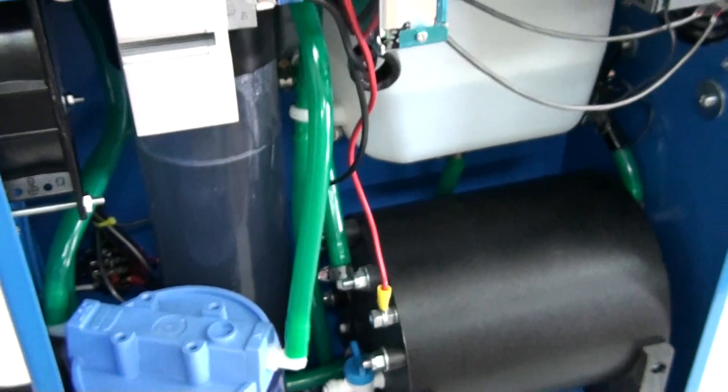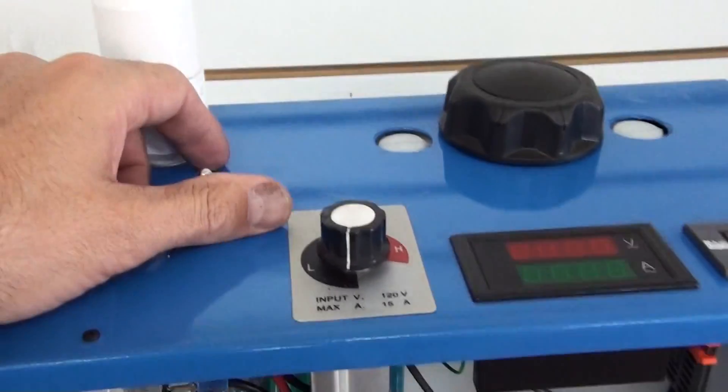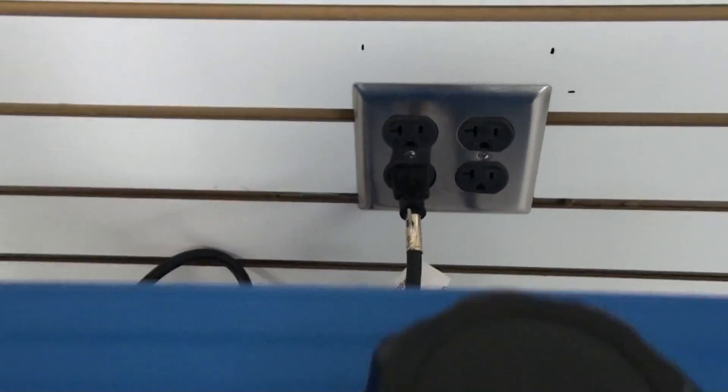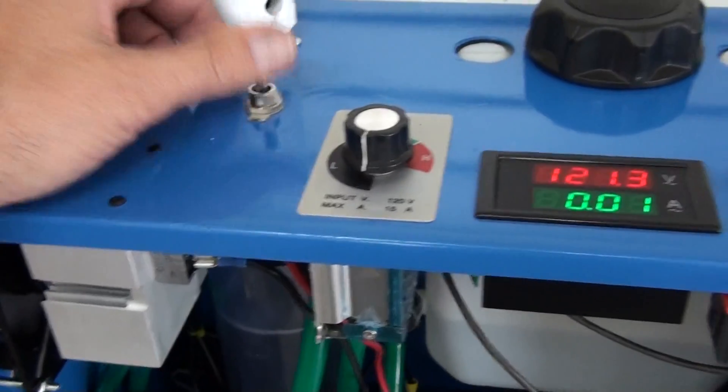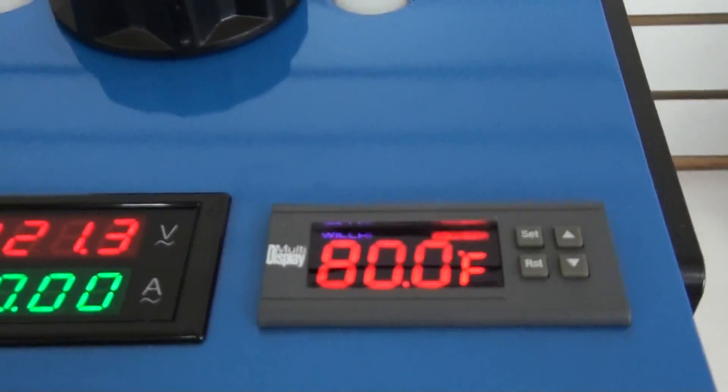So I'm going to turn on the machine and show you how it works. So we've got an on-off switch here. The machine is plugged right into the wall. The switch is turned on, and over here we have to reset the thermostat.